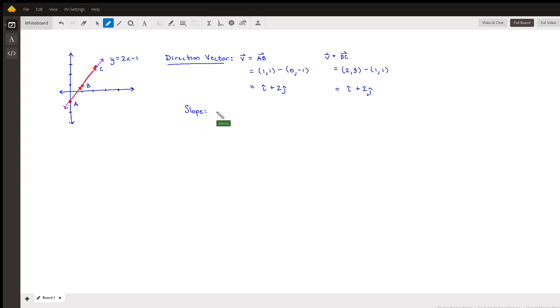So the slope of the line was 2, right? Most students can look at y equals 2x minus 1 and identify that the slope is 2. Well, we know that slope is usually rise over run.